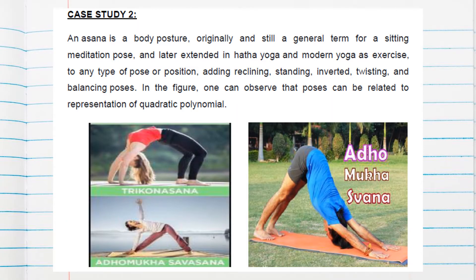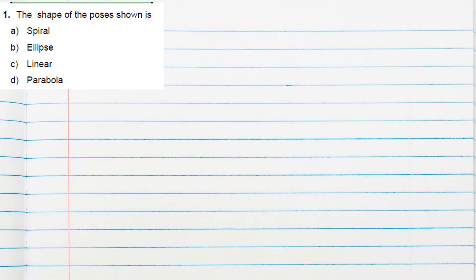Hello students, this is case study 2 from the chapter on polynomials. Asana is a body posture — originally a term for a sitting meditation pose, later extended in hatha yoga and modern yoga to any type of pose, including reclining, standing, inverted, and twisting positions. They have put a picture of an asana showing a parabolic shape, which means it is related to a quadratic polynomial. Question 1: the shape of the pose shown is a parabola, and it represents a quadratic polynomial.